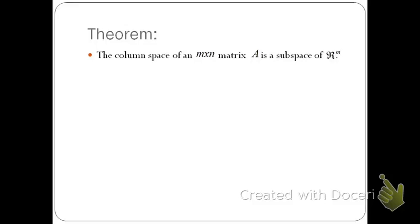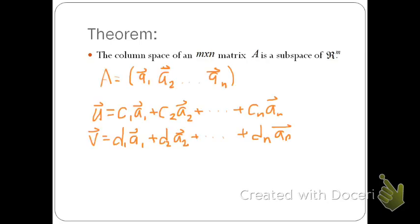We now have a theorem: the column space of an m by n matrix A is a subspace of Rᴹ. Think about this proof yourself. Given A with columns A1 through An, consider U = c1·A1 + … + cn·An and V = d1·A1 + … + dn·An. Verify that the zero vector is included, that it is closed under addition, and closed under scalar multiplication. Please work out this proof in your notes.